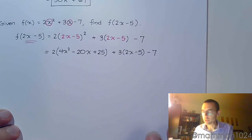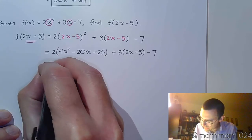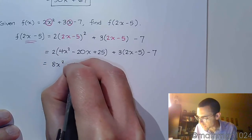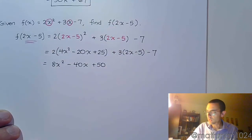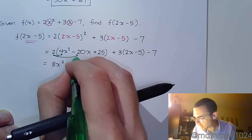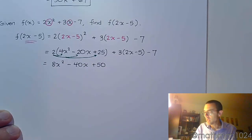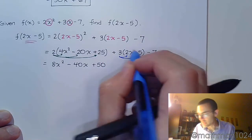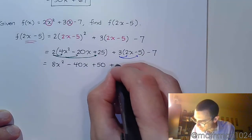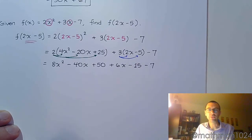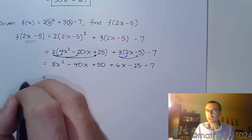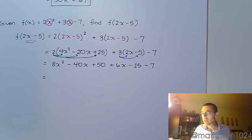So here I have 8x squared. Distribute the 2 and I get 40x plus 50. So that's just taking the 2 and multiplying it to each term on the inside. And I'm going to do the same thing with the 3 over here. Distribute the 3. So we have plus 6x minus 15, then we bring down that lonely 7 there at the end. So really the big idea that we had was replacing the x with 2x minus 5. The rest of this is just an exercise in working with polynomials, multiplying, distributing, and now combining like terms.